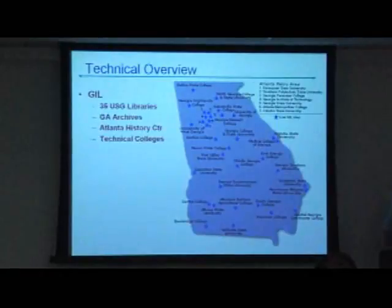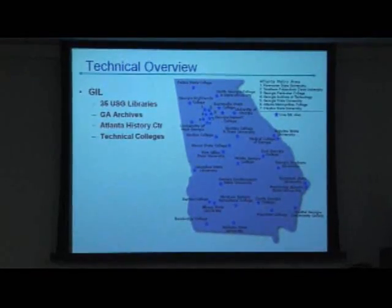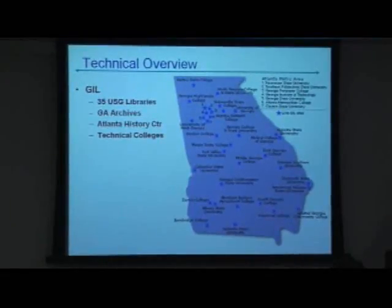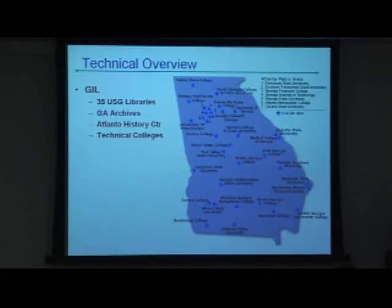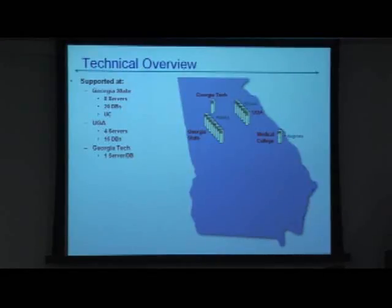Just a little overview of the USG. We're not quite as big as Carly. We're 35 institutions across the state of Georgia. We also include the Georgia Archives, the Atlanta History Center, and some of the technical colleges. We are not centralized. We have some servers at Georgia State, some at UGA, and one server at Georgia Tech. We used to have a server at the medical college in Augusta, but we absorbed that server at UGA a year or so ago.